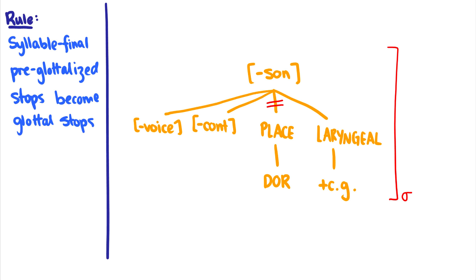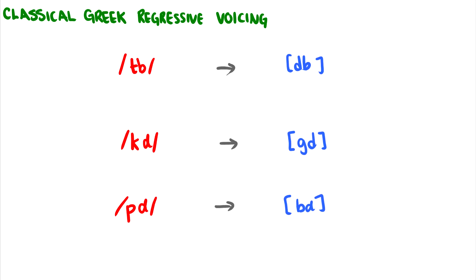Now, that's a case of delinking. We should look at a case of spreading as well. So we're going to talk about classical Greek regressive voicing, and there's two really cool things that we're going to demonstrate. The first one is that when you have a voiceless stop followed by a voiced stop, the previous stop gets voiced, hence regressive voicing.